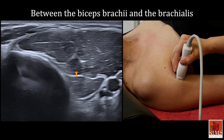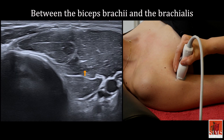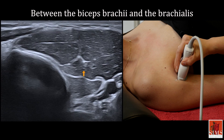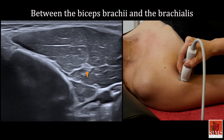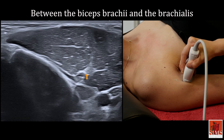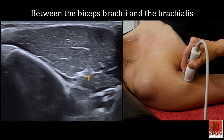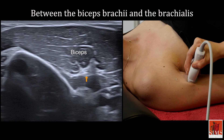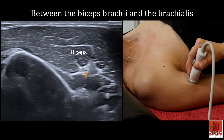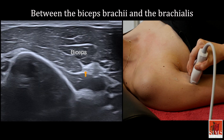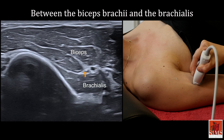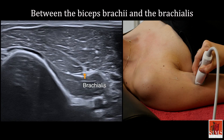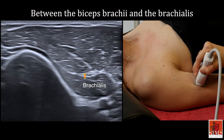Where it exits the coracobrachial muscle, the musculocutaneous nerve runs between the biceps brachii in front and the brachialis muscle behind.